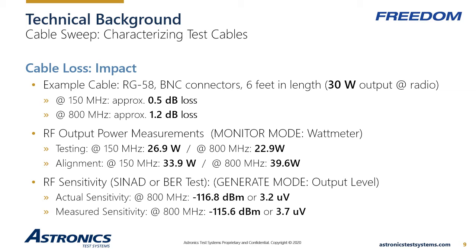When connected between the radio and test equipment, a 30-watt radio will measure 27 watts at 150 MHz and 23 watts at 800 MHz. If we align the radio to measure 30 watts at the service monitor, the radio's actual output will be 34 watts at 150 MHz and almost 40 watts at 800 MHz. This is probably outside the manufacturer's specifications for the radio and could significantly reduce the lifespan of the radio's power amplifier. The radio may not even be capable of that power level, leading to the false conclusion that the radio is faulty.